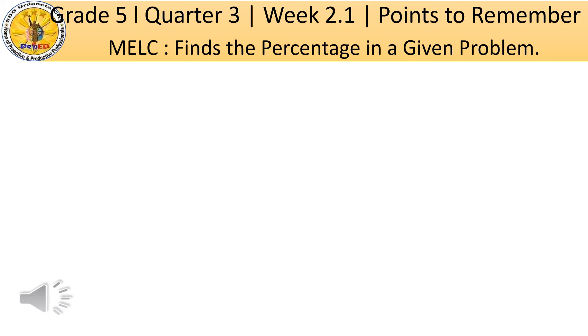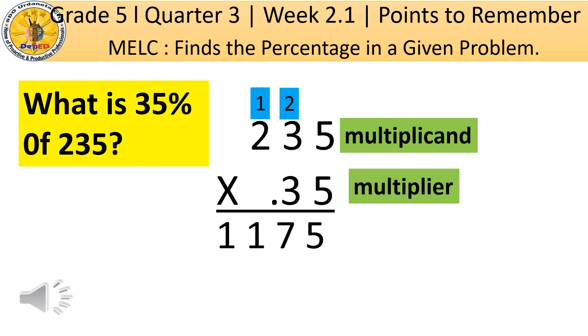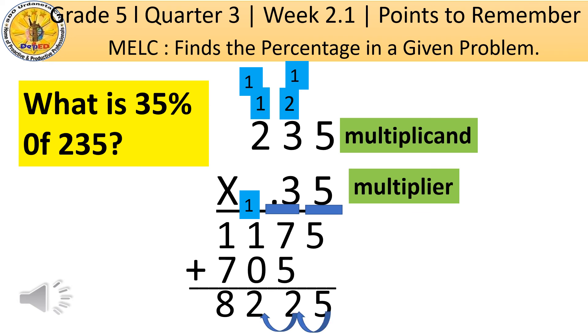Always remember that in finding the percentage, just multiply the rate and the base: P equals R times B. You can write in vertical way and multiply the given numbers in the multiplicand and multiplier, like multiplying whole numbers and get the product. Then count the number of decimal places of the given numbers in the multiplier to determine the number of decimal places of the product. Then place the decimal point in the product.